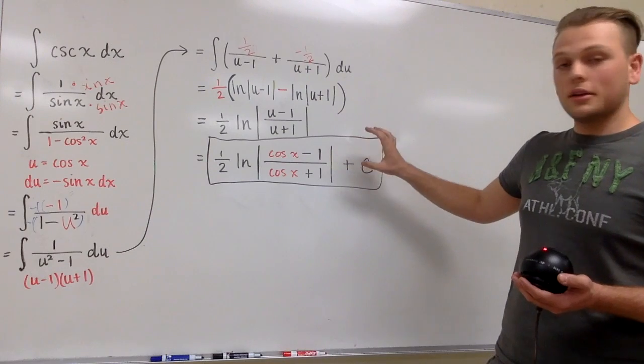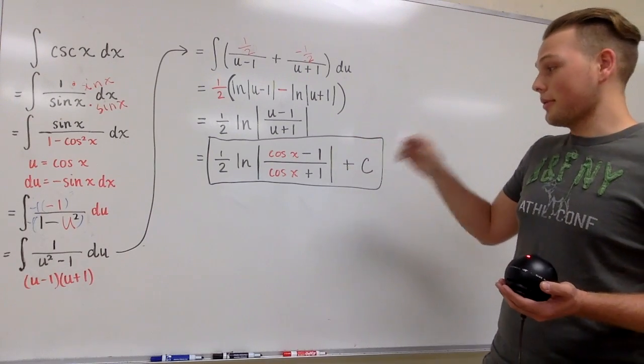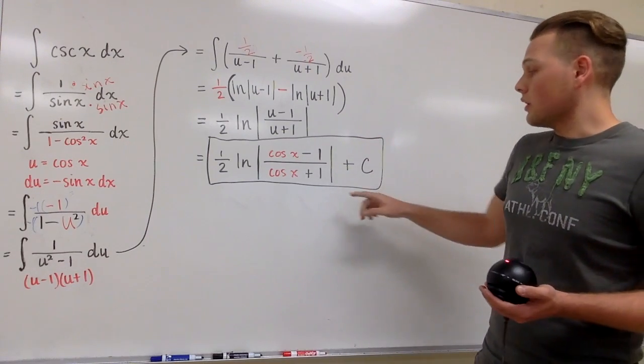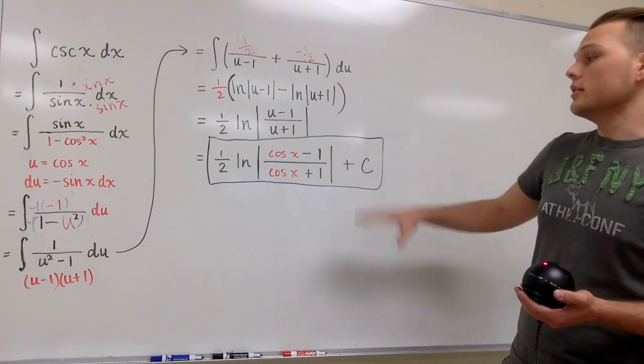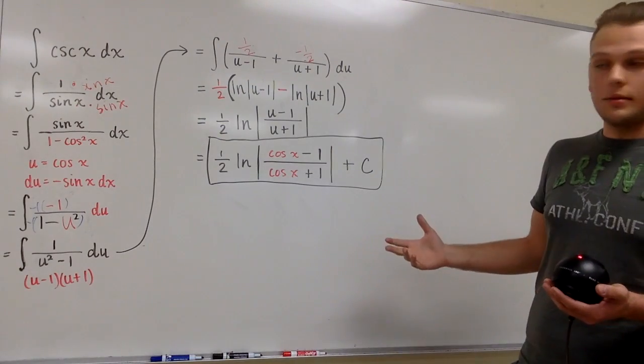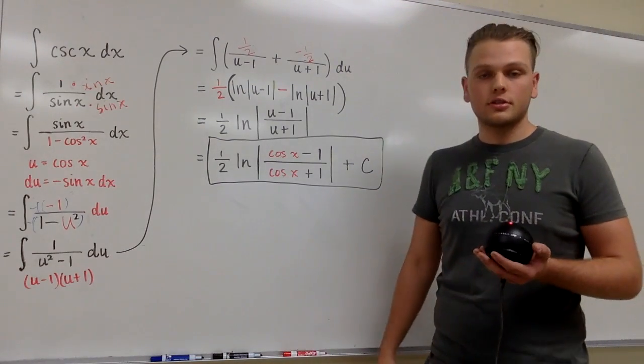And to get this to look more like the traditional format of the answer you can go ahead and multiply by the conjugate of cosine x plus 1. You can simplify it and you should be able to get to that traditional answer.